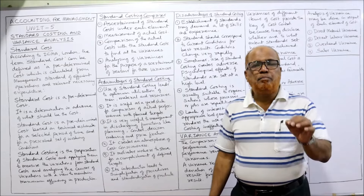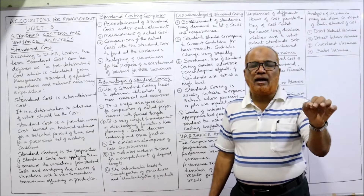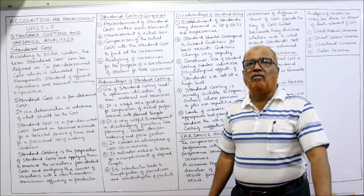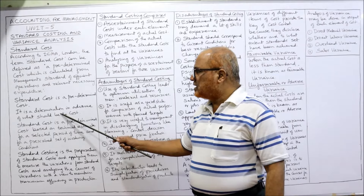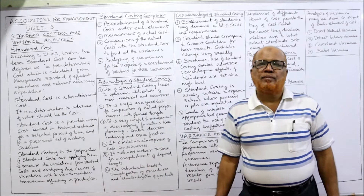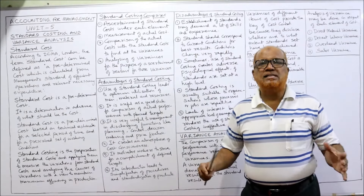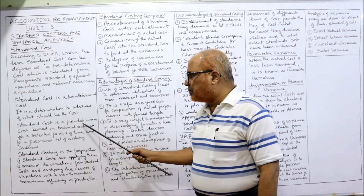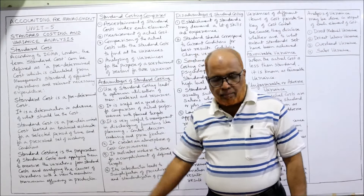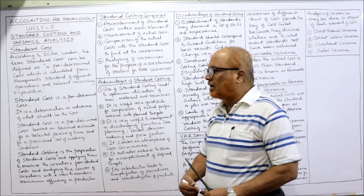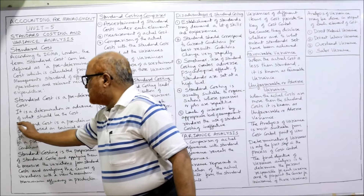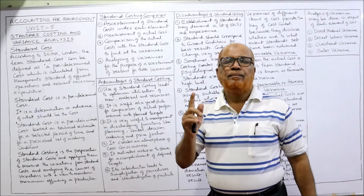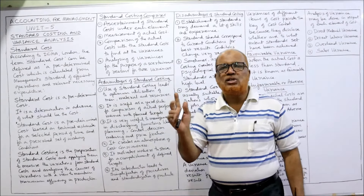Standard cost is a predetermined cost — cost entered before it is incurred, cost recorded in advance. It is the determination in advance of what the cost should be in the future. The best definition which contains the main ingredients of standard cost: standard cost is a predetermined cost based on technical estimate. Remember, the standard cost is not just a guess — it is a technical estimate.